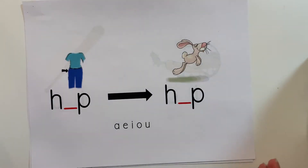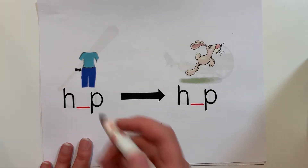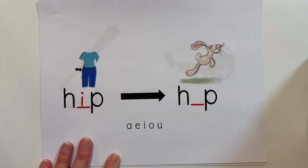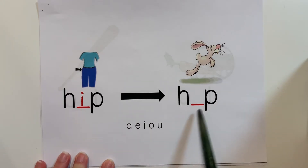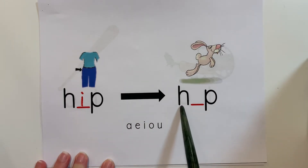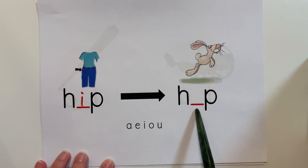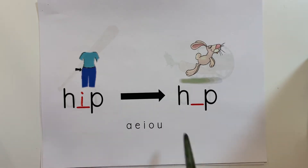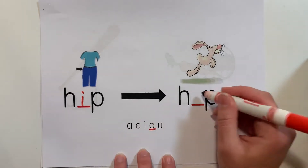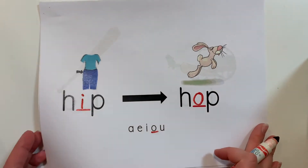Let's try another one. We have H-I-P — that is the I sound. I want to change it to hop — H-O-P. What is my new middle sound for hop? Changing it to O would change hip to hop.